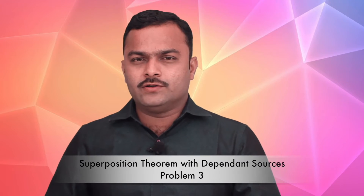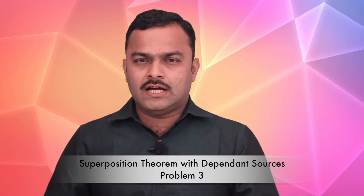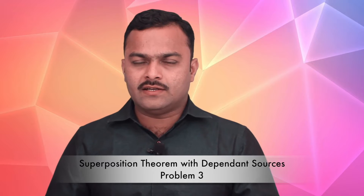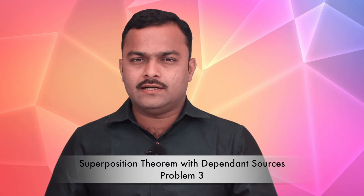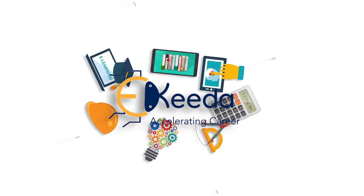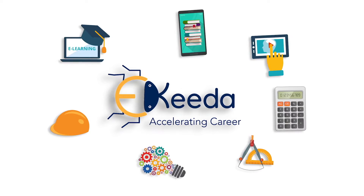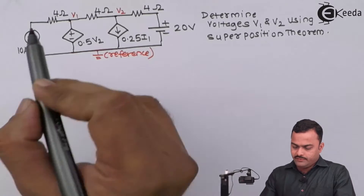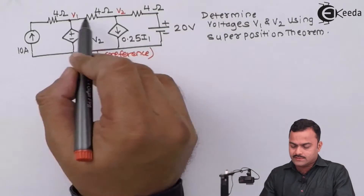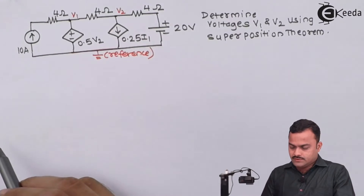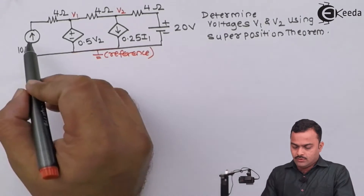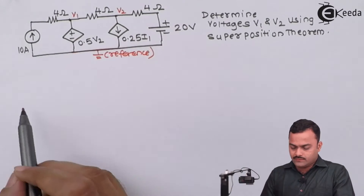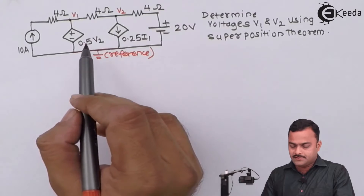Hi friends, in this video we are going to see how to apply the superposition theorem in a circuit consisting of dependent as well as independent sources. In this problem we are supposed to get voltages v1 and v2 — the node voltages given in the circuit — using superposition theorem. In all there are four sources: two are independent and two are dependent sources.